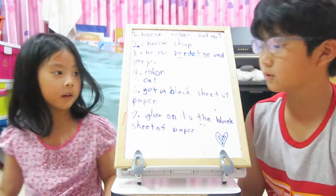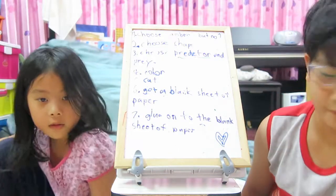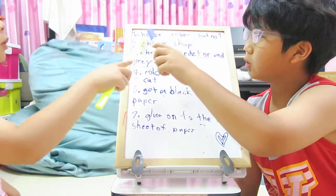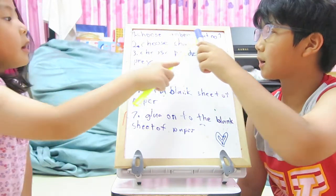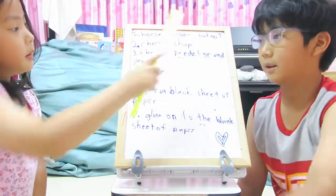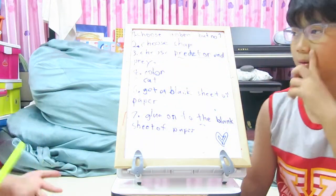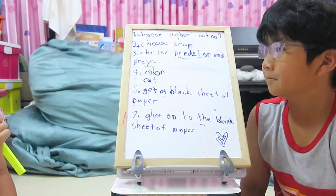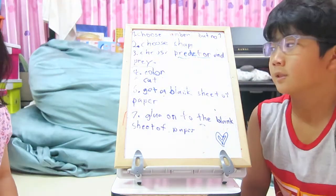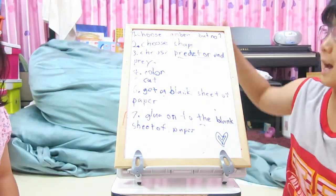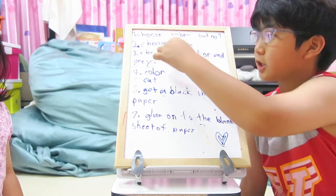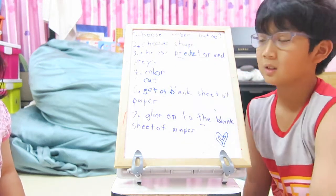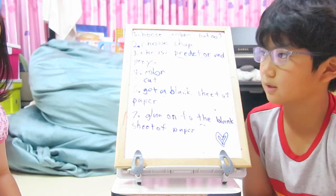Let's read them the first food chain steps. Step one: choose a number, but not one. You could choose any number. Then step two: choose a shape. You could choose any shape.